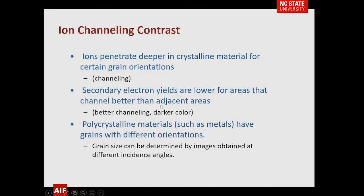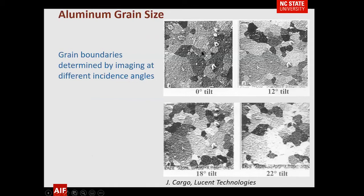Here's an example — an aluminum layer. If you look at a particular grain and follow it through by tilting the sample at different angles, you see it go brighter, then a little darker, then dark again. You can take these images as a set and pretty much deconvolute what all your grains are.